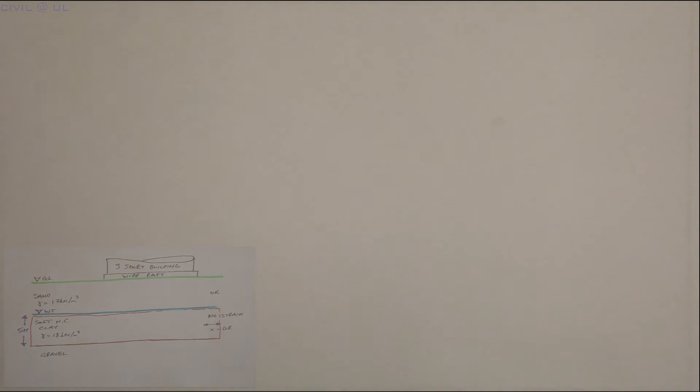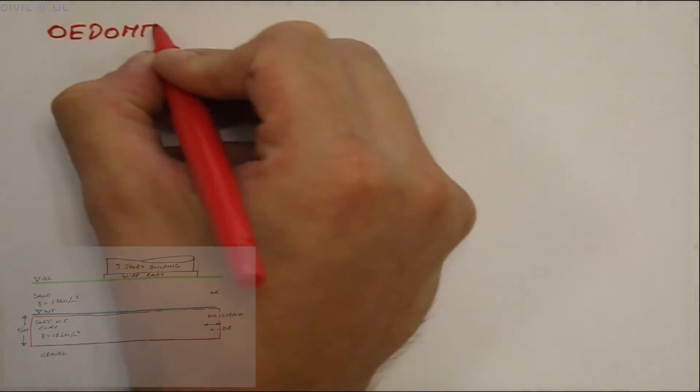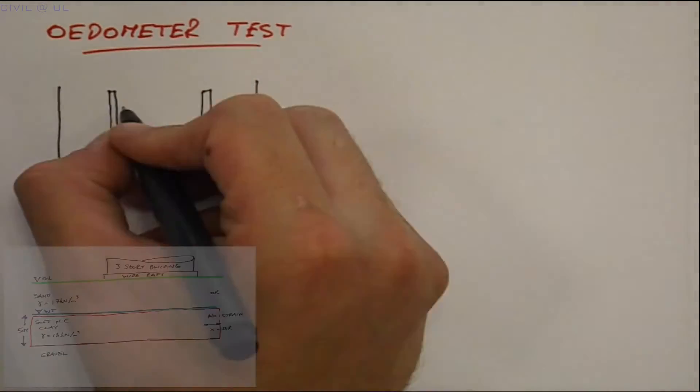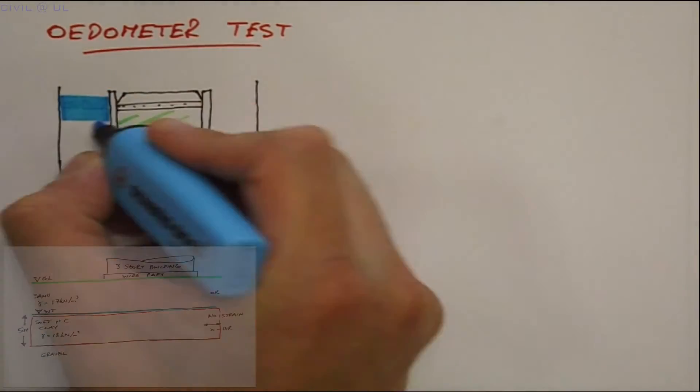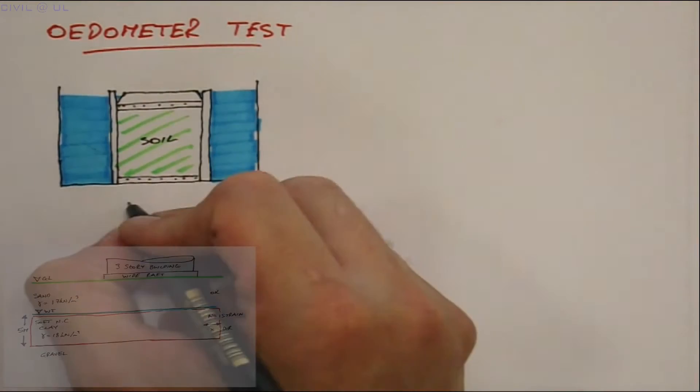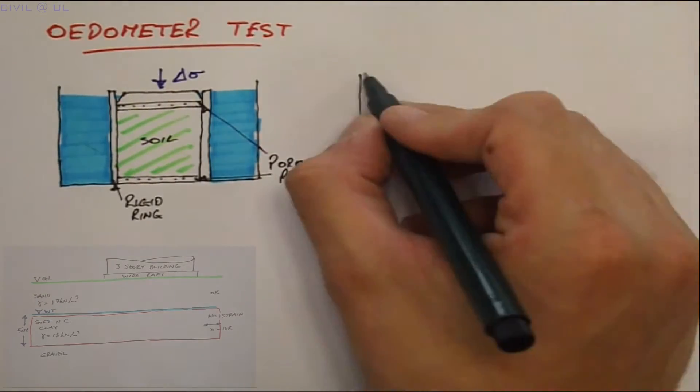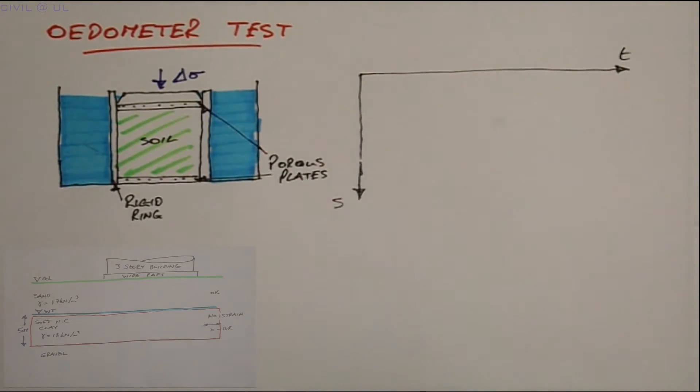To evaluate this, an undisturbed sample recovered during the site investigation is subjected to an odometer test in the lab. In this test, a specimen taken from the sample tube is carefully inserted into a rigid ring. The specimen is then inundated and subjected to a series of increasing stress increments. Each increment causes an increase in pore water pressure, and this dissipates through porous plates above and below the specimen. While this is happening, measurements are continuously recorded until the settlement is essentially complete.